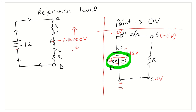The voltage at point C is going to be minus 2 volts. The voltage at point D will be further negative — because D is connected closer to the negative side of the battery — so it is going to be minus 6 volts.